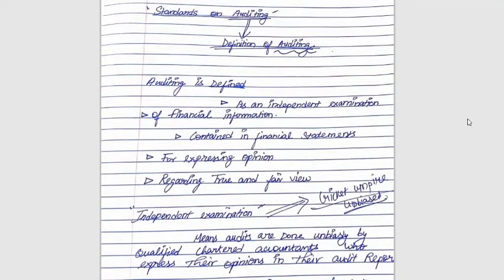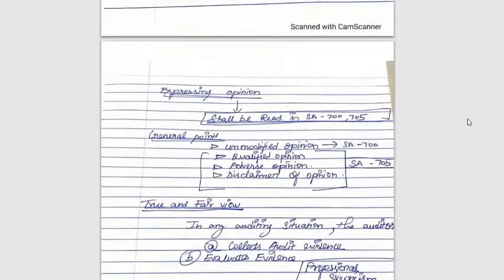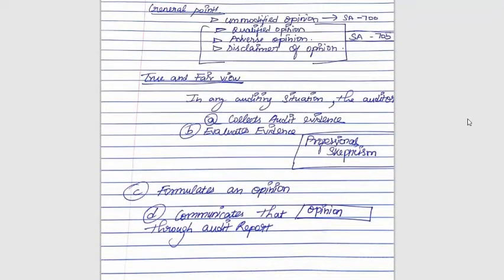Going back to the definition, the last part is expressing an opinion regarding true and fair view. So auditing is defined as an independent examination of financial information contained in financial statements for expressing an opinion regarding true and fair view. To determine this, the auditor must collect evidence — for example, to verify purchases, you compare the financial statements with the actual bills. You collect audit evidence and evaluate those bills.